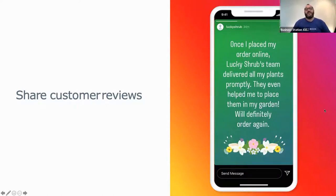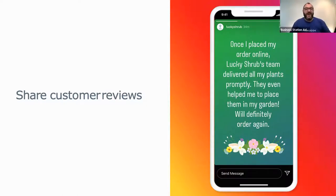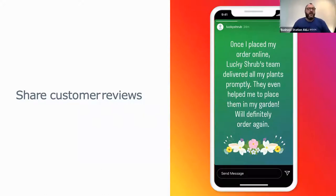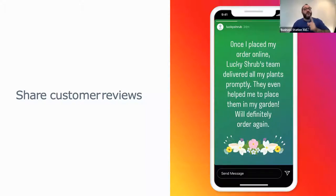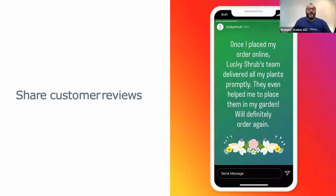You can share customer reviews really nicely on stories — they just look so much better because it's a full-screen experience on mobile. You can put quite lengthy reviews and add stickers and images like a flower sticker below. There's a range of stickers available and you can add lots of different elements. You can place text over the top of an existing photo — of the client, or the plant they bought, or the garden they've done. Stories don't clutter up your feed and they come and go within 24 hours, though you can save your stories into collections. Just do it within that 24 hours to make sure you've got the option to save them.